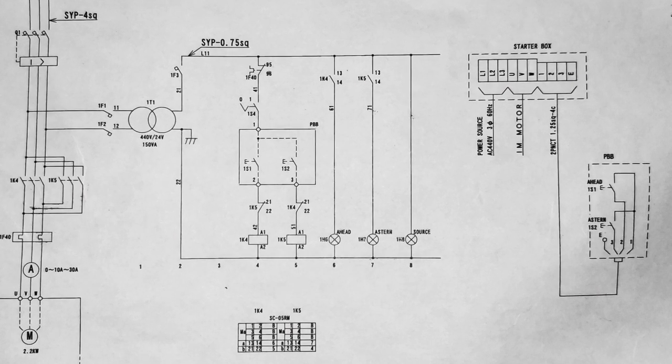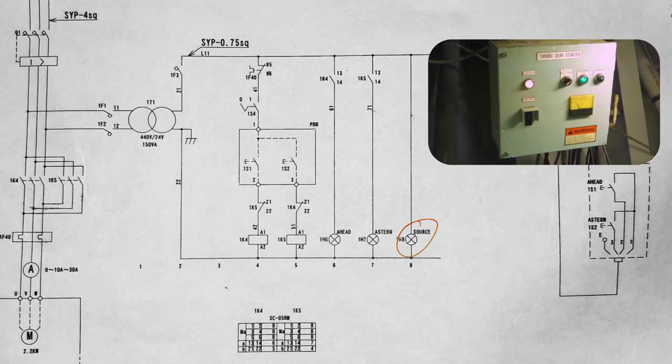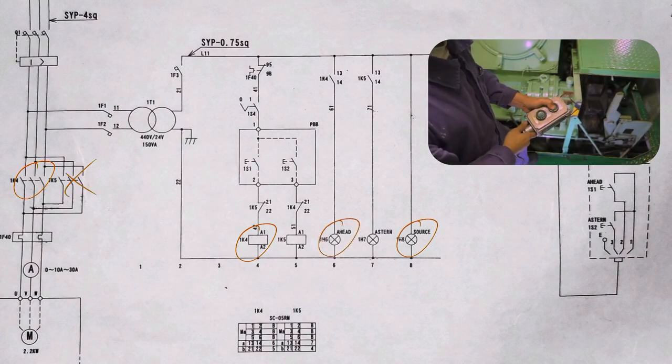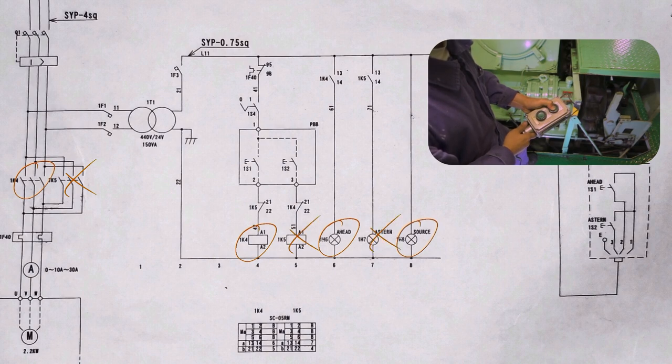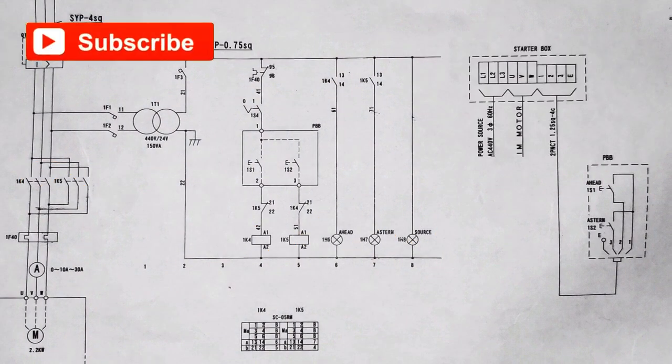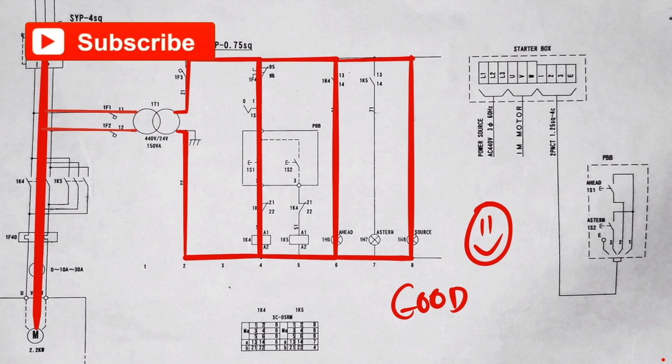Summing up from what I observed: panel has source voltage, motor forward rotation works as well as indicating light when forward push button is pressed. Motor astern rotation does not work as well as indicating light when astern push button is pressed.